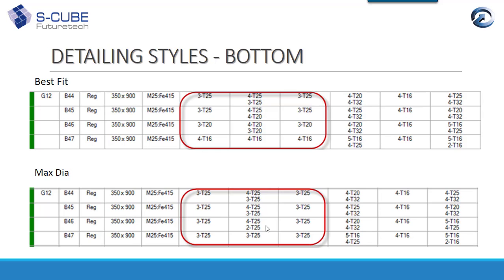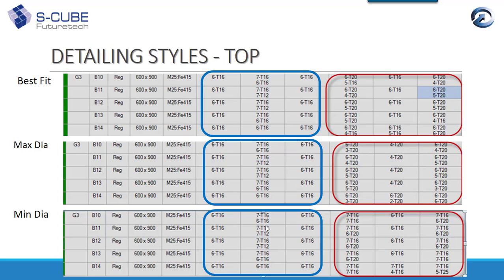For top detailing with minimum dia: comparing best fit, max dia, and minimum dia — with best fit giving 6Ø20 and 5Ø16 at various zones; with max dia, 20 mm is provided throughout with additional bars as needed. With minimum dia selected, 16 mm bar is provided throughout and whatever additional area is required is added — for example, where 6Ø20 and 4Ø20 were required, it now provides 7Ø16 and 6Ø20, still complying with the required AST.